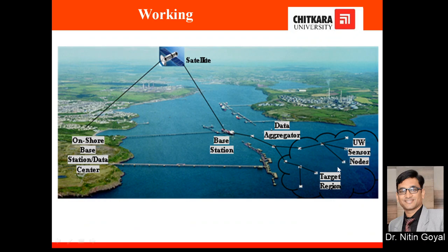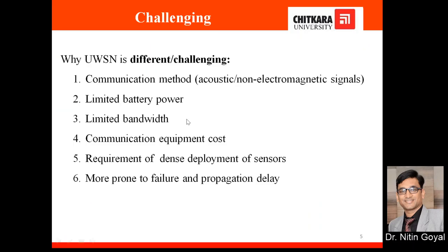Now, how does it work? Nodes are deployed — these underwater sensor nodes, shown as white dots, send their data to another sensor node acting as a data aggregator or cluster head. It ultimately goes to the offshore base station on the water surface. If that station is far away, via satellite it can send data to the onshore base station. This is the main working of the underwater sensor network.